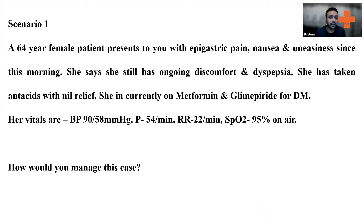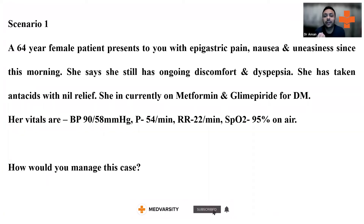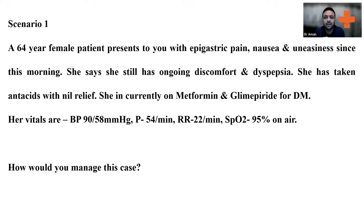The first clinical scenario: a 64-year-old female presents with epigastric pain, nausea, and uneasiness since this morning. She has ongoing discomfort and dyspepsia, and has taken antacids with no relief. She is currently on metformin and glimepiride for diabetes mellitus. Vital signs: BP 90/58, pulse rate 54 per minute, respiratory rate 22 per minute, and oxygen sats 95% on air. How would you manage this case?